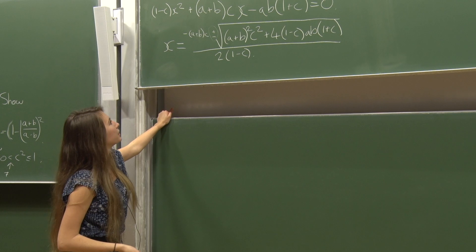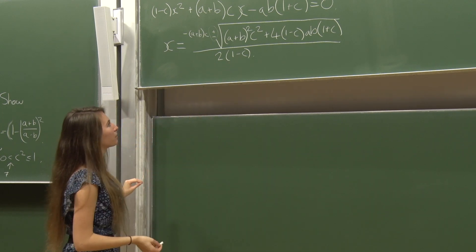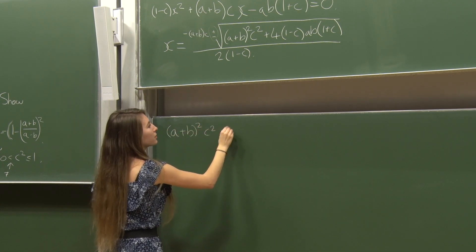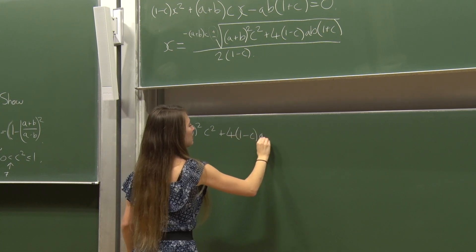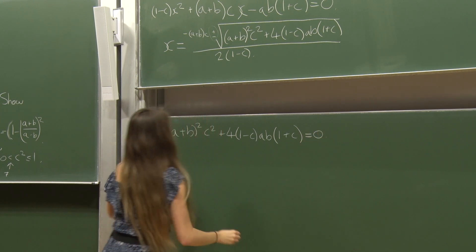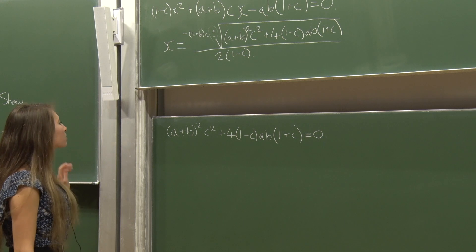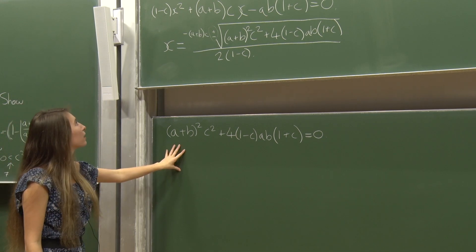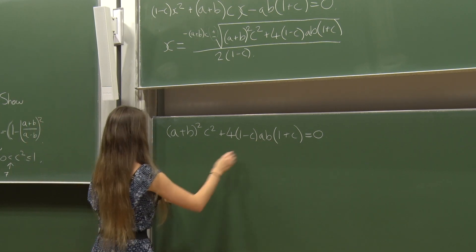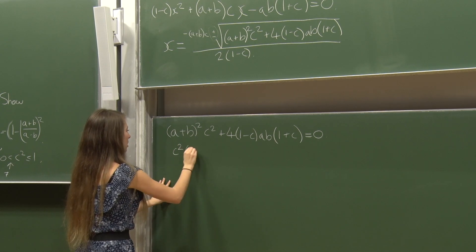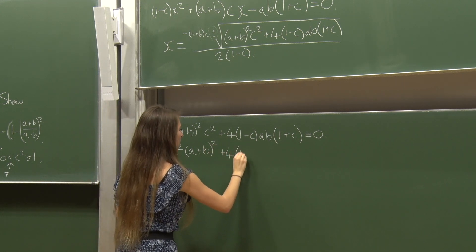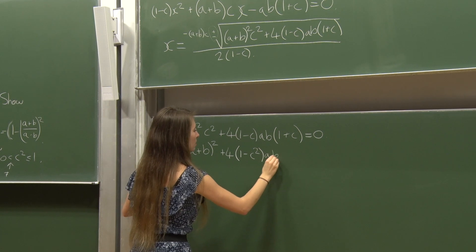So it has exactly one solution when (a+b)²c² + 4(1-c)·ab·(1+c) = 0. Since (1-c)(1+c) = 1-c², I can write this as c²(a+b)² + 4(1-c²)ab = 0.